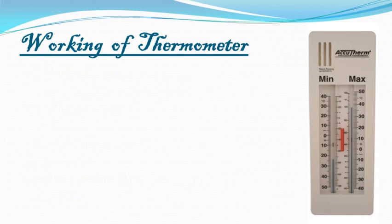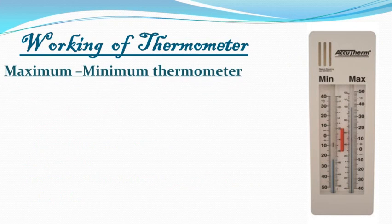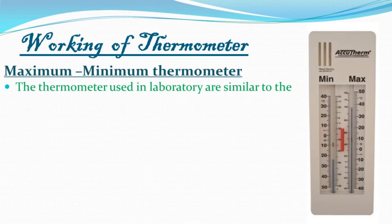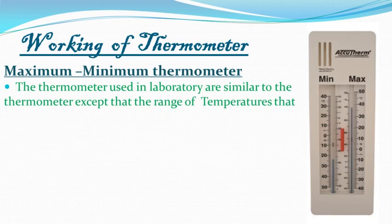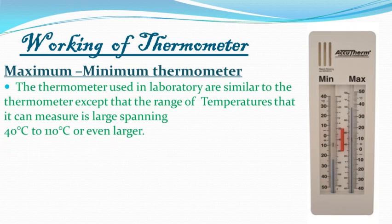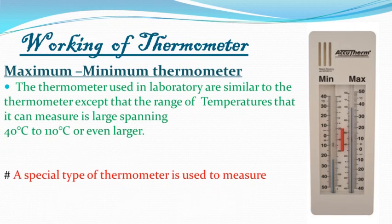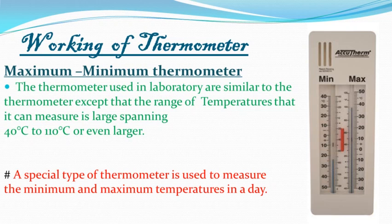The next type is the minimum-maximum thermometer. Laboratory thermometers can measure a large range — from −40°C to 110°C or even larger. A special thermometer called the maximum and minimum thermometer is used to measure both the minimum and maximum temperatures in a day, and it can record both with just one thermometer.